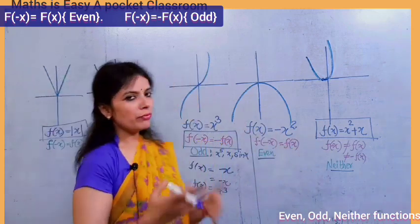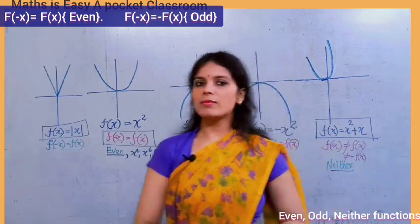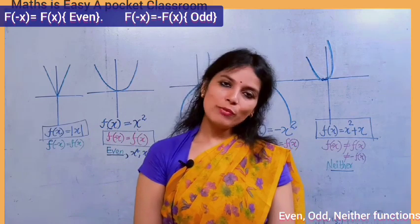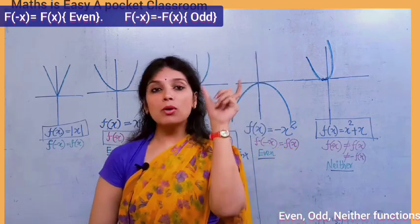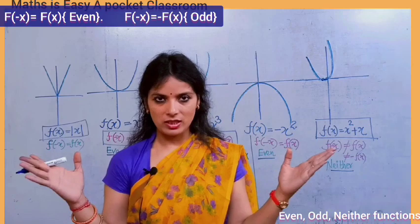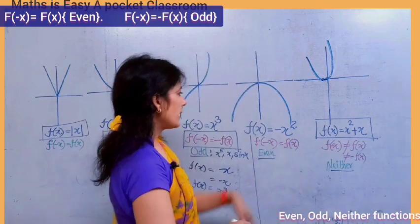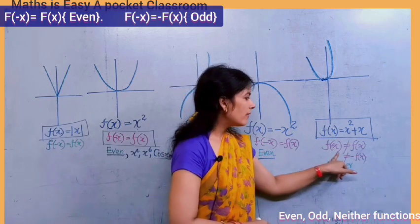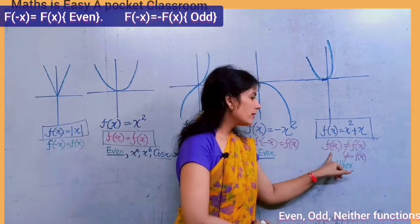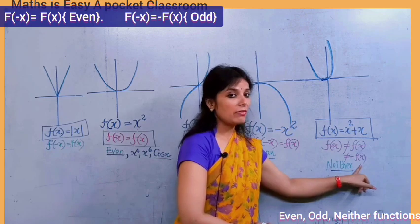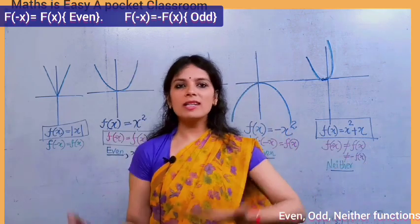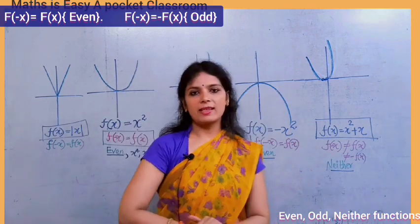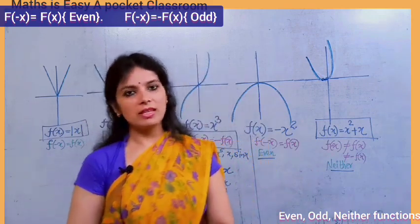Now, the neither function. A function which is neither even nor odd is called a neither function. Mathematically, a function which is a sum of an even and an odd function is a neither function. For example, x² + x is a neither function because neither f(−x) = f(x) nor f(−x) = −f(x). A function which is neither even nor odd is called a neither function.